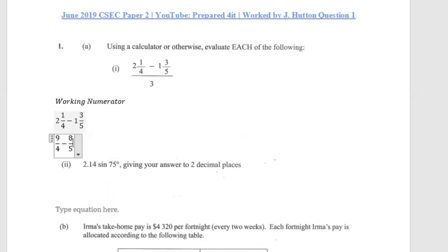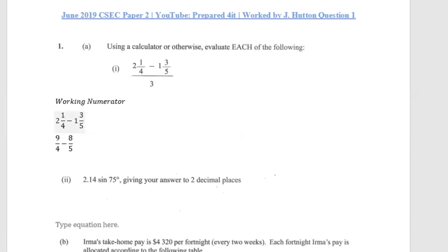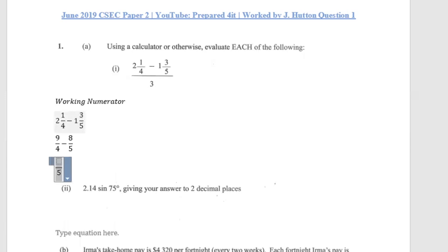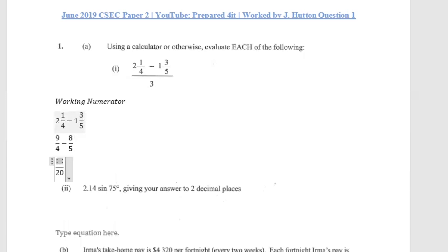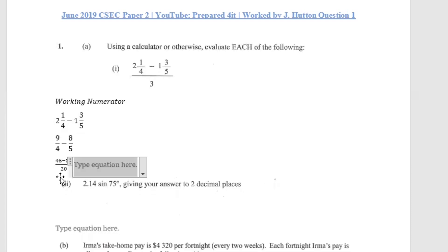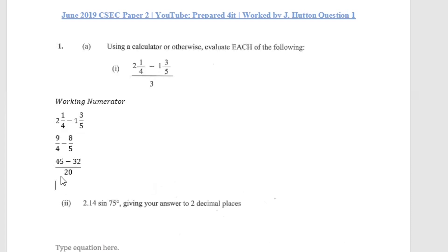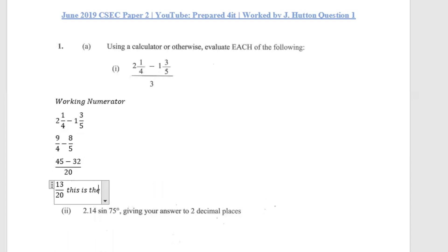Next we find the LCM of the denominators, which are five and four — the LCM is 20. Our new numerators are expressed over 20: four into 20 goes five times, so five times nine is 45; five into 20 goes four times, so four times eight is 32. We then do our subtraction: 45 minus 32 gives us 13 over 20. This is the answer for the numerator portion.